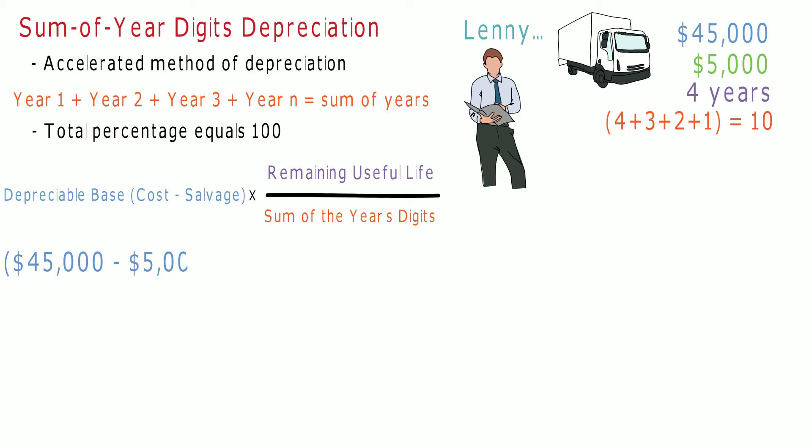Using the formula, we can see that the depreciable base ($45,000 - $5,000), multiplied by the remaining useful life for year 1 (4), divided by the sum of the year's digits (10), will give us a depreciation value of $16,000.